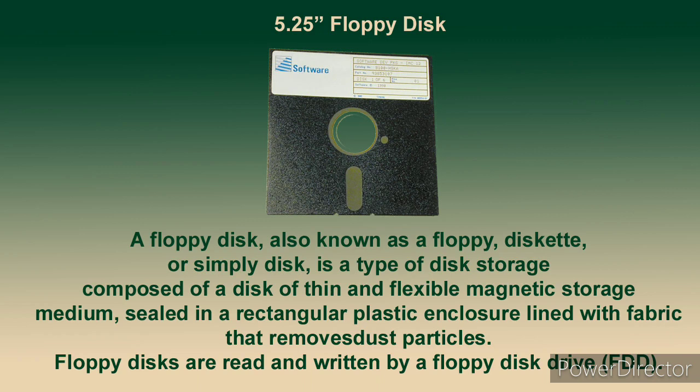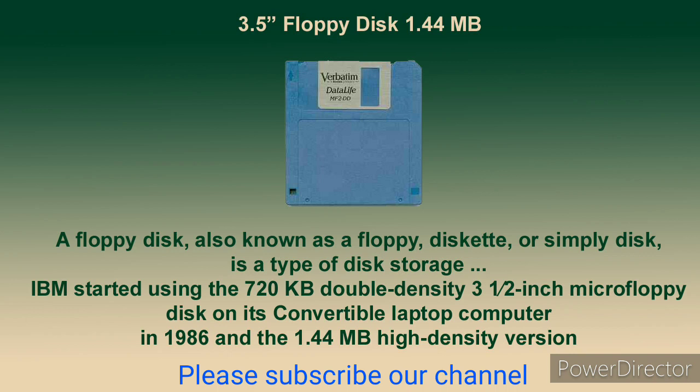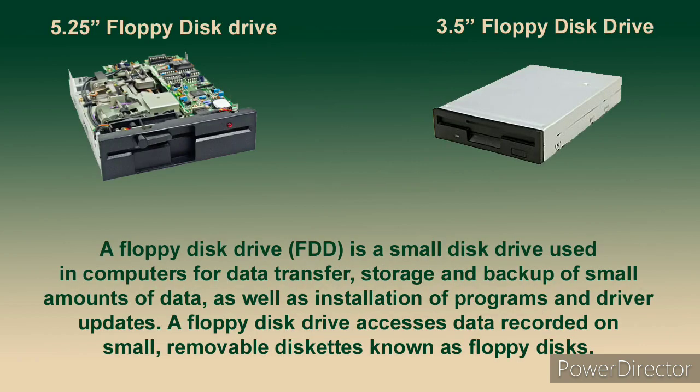The 3.5-inch floppy disk had a maximum capacity of 1.4 MB in its high-density version. These are the drives used for both the 5.25-inch and 3.5-inch floppy disks.